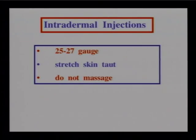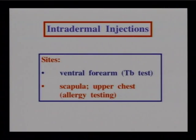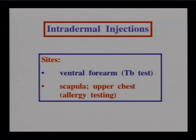Intradermal injections are given at about a 10-degree angle, almost flat. Use a 25 to 27 gauge needle. Stretch the skin taut and inject almost flat at about 10 degrees. Do not massage after an intradermal injection. These are frequently used for skin testing, such as the tuberculin skin test in the ventral forearm. The upper back scapula area and upper chest are often used for allergy testing.